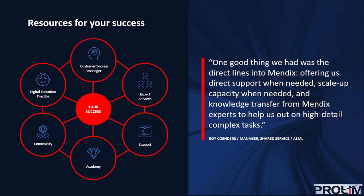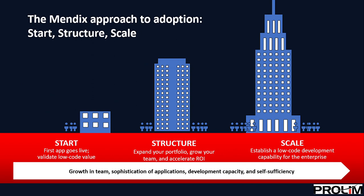How do you start adopting Mendix into your ecosystem? First, your first app goes live and you validate the low-code value — basically confirming whether you need to go with low-code and how good Mendix is for you. Then you expand your portfolio, grow your team, and train your internal teams on developing Mendix applications. Once the structure is in place, you scale your model to build all your internal requirements and other applications on Mendix.